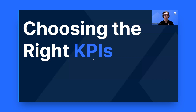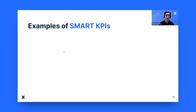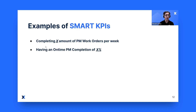Moving on to choosing the right KPIs. When we start creating PM programs, one thing that is very important is to set some goals and objectives — completing a certain amount of PM work orders per week. We could also have an on-time PM completion of a certain percentage. We want to make sure that not only we perform our PMs, but we also perform them on time.